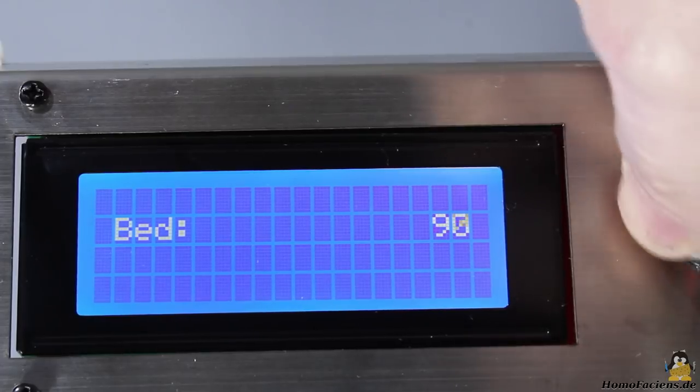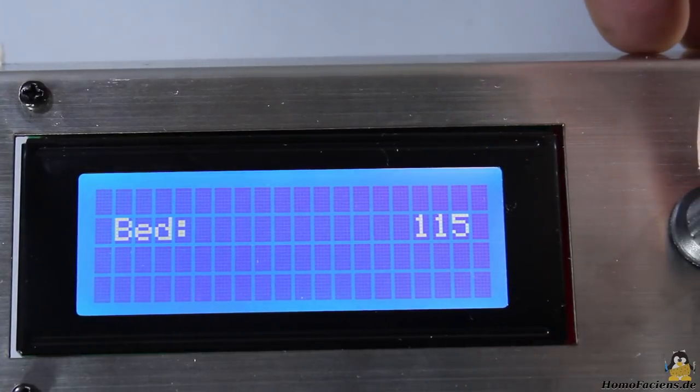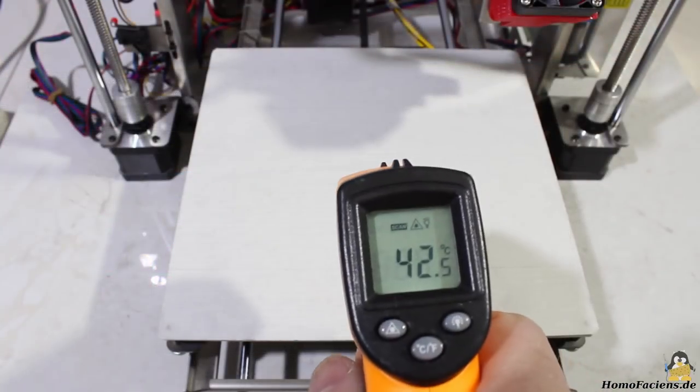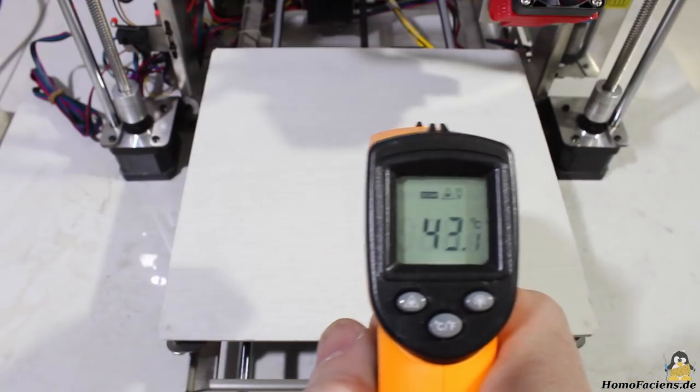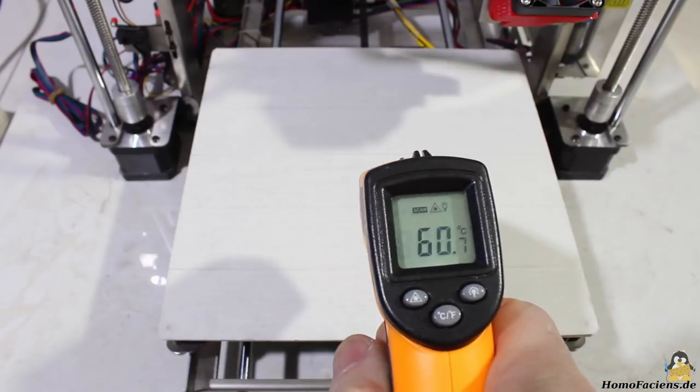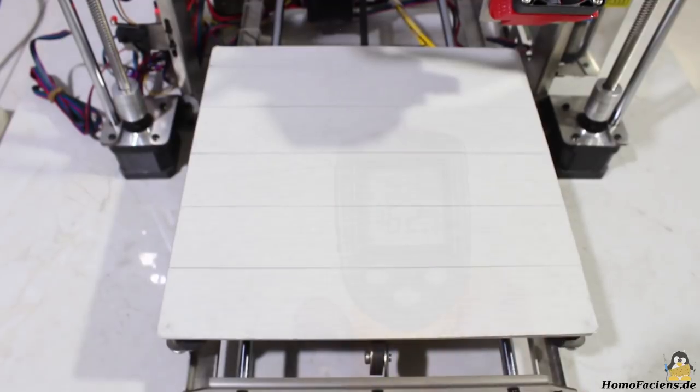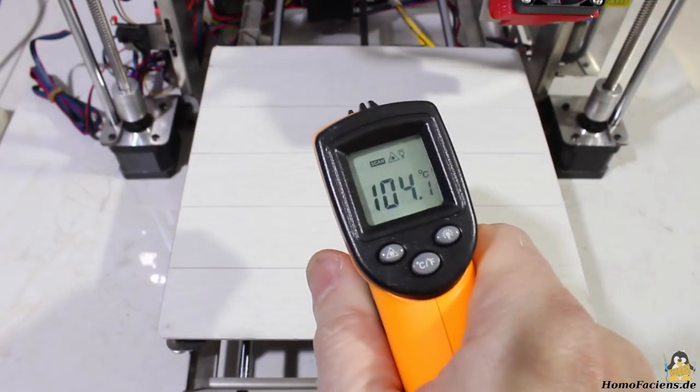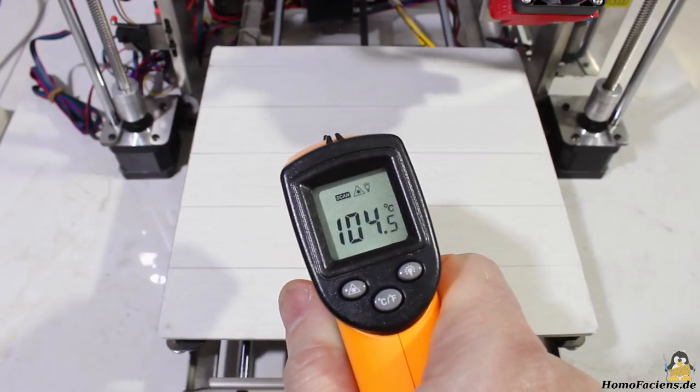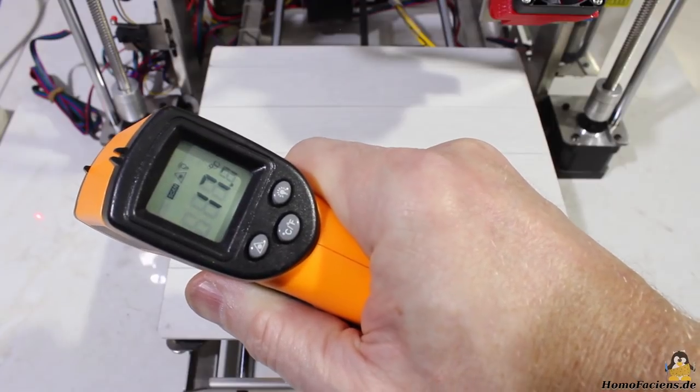The maximum temperature of the print bed is limited to 115 degrees Celsius by software. 40 degrees Celsius were reached after approximately 3 minutes, 60 degrees Celsius after 5 minutes, and a bit more than 100 degrees Celsius after 15 minutes, which is more or less the maximum temperature. The environmental temperature in my video studio is approximately 17 degrees Celsius.